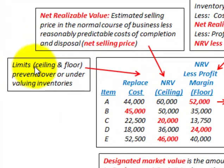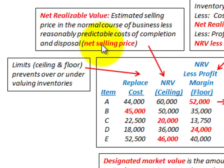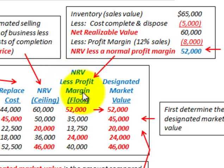The ceiling and floor are limits that prevent over or undervaluing our inventory — the ceiling amount can't go over that, and the floor amount, you can't go under that. For our net realizable value, that's the ceiling amount — the estimated selling price in the normal course of business less any reasonably predicted cost of completing or disposing of the inventory, which we refer to as the net selling price. The floor is the net realizable value less the normal profit margin.